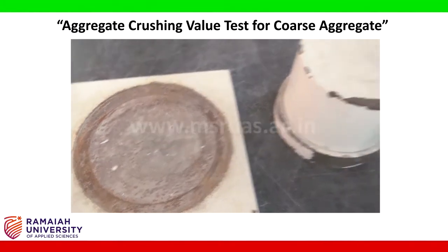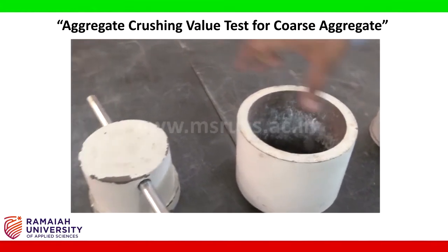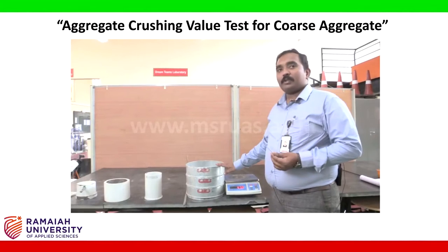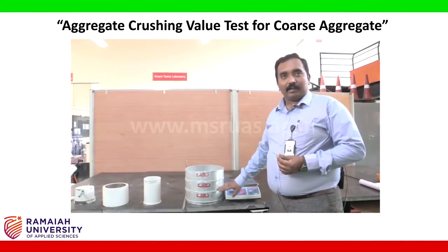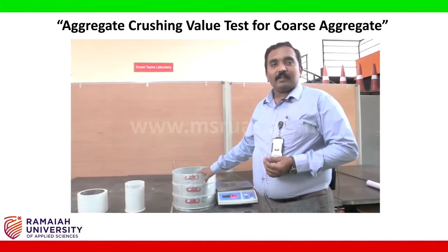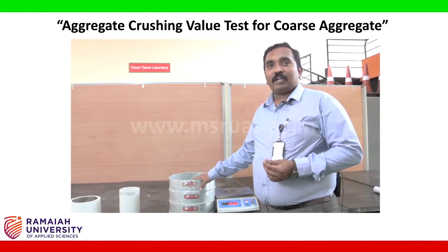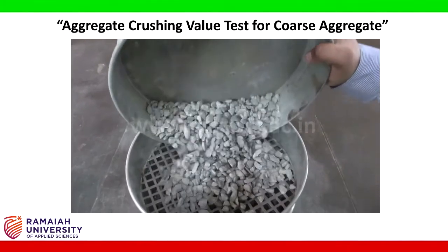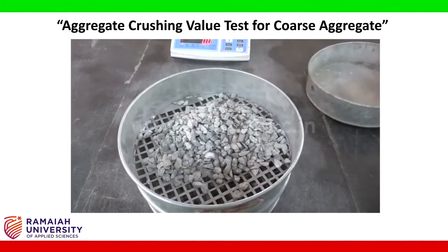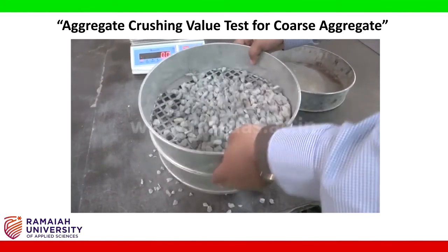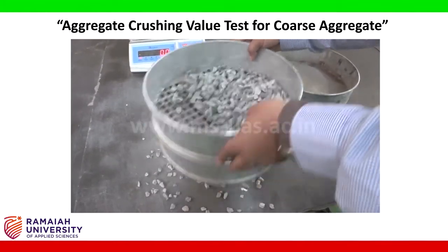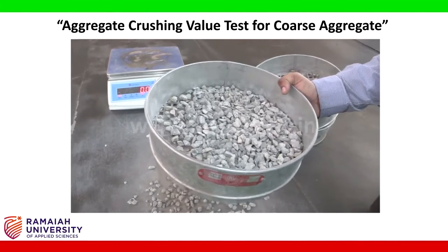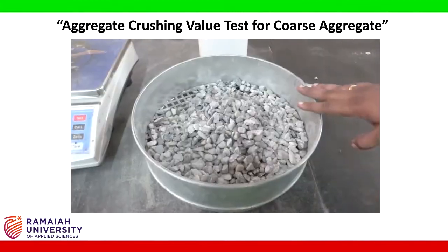The second part of the experiment is the procedure. First, take the standard IS sieves of 12.5 mm and 10 mm, place some aggregate in them, and sieve. We want the fraction of aggregate passing 12.5 mm and retained on 10 mm IS sieve. Put the sample on the 12.5 mm sieve, sieve the aggregate, and collect the fraction passing 12.5 mm and retained on 10 mm IS sieve.